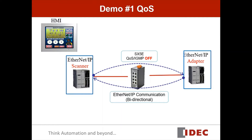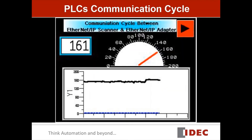To measure the communication cycles of the PLCs, I created logic in the PLCs using cam instructions and adding a counter. I have also connected an HMI to the PLCs so I can see how fast the two PLCs are communicating. The number you are seeing here is the communication cycles of the two PLCs. The larger the number, the faster the communication speed between the two PLCs over Ethernet IP.